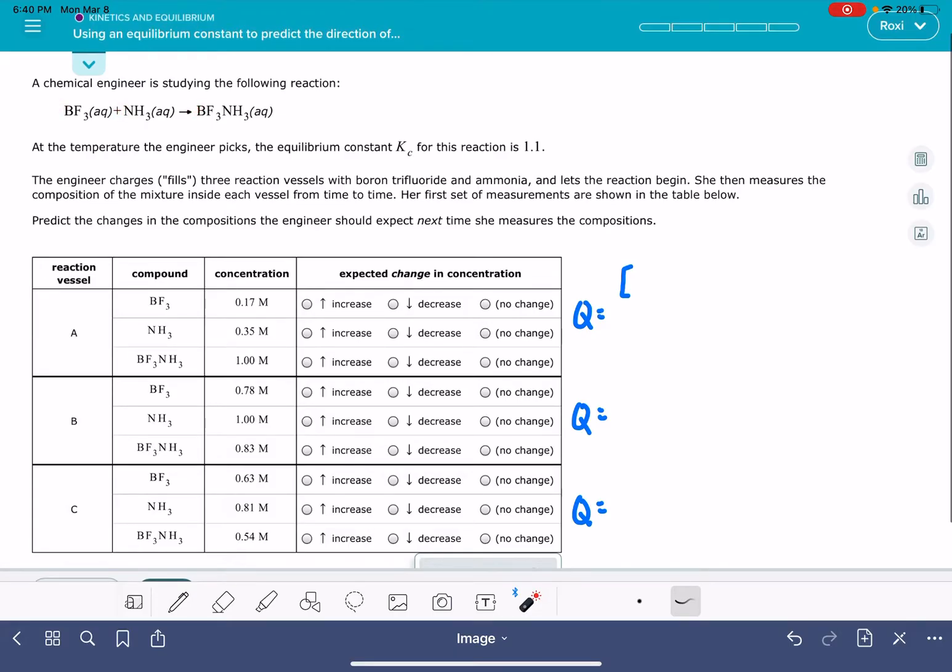And fortunately for this one, all of our stoichiometric coefficients are one, so we don't really have to worry about any of those exponents. So we're going to start by writing our equilibrium expression, our Q equation. That's going to be BF3NH3 over BF3 times NH3.